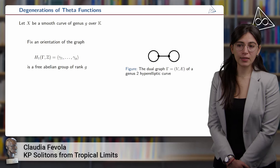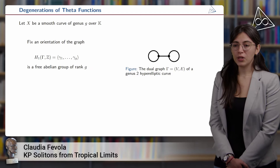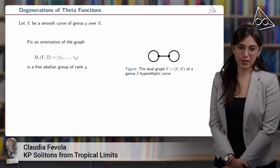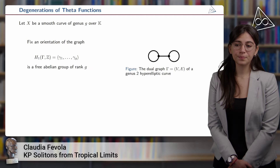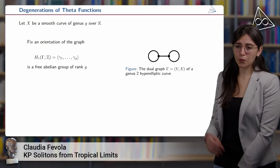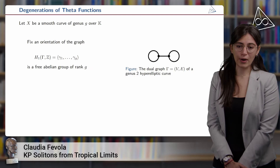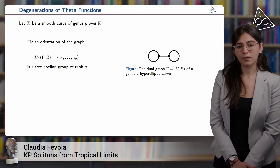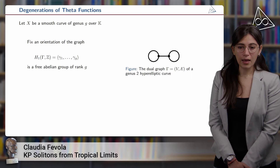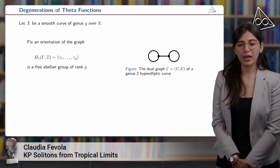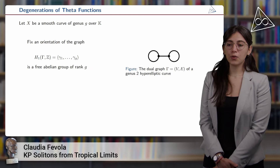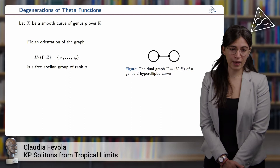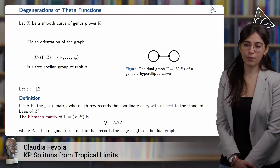We first want to look at the degeneration of the theta function for this type of curves. We take X to be a smooth curve of genus G over the field k, and by fixing an orientation of the graph we can compute the group H1, which happens to be a free abelian group of rank G. We are interested in the special fiber of such curves — in this case the curves will look like graphs with G cycles, as in the picture for the case of a genus 2 hyperelliptic curve. Since H1 is a free abelian group of rank G, we have a finite basis, which we can use for defining the Riemann matrix arising from such a curve.